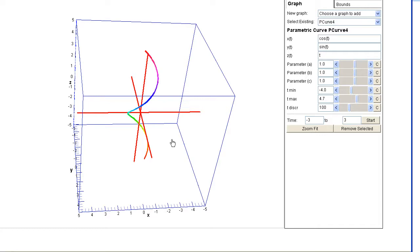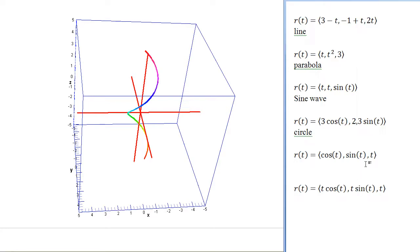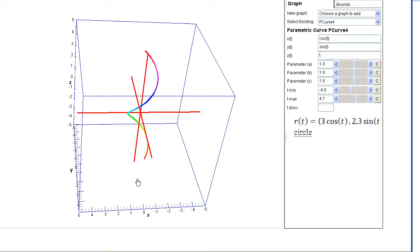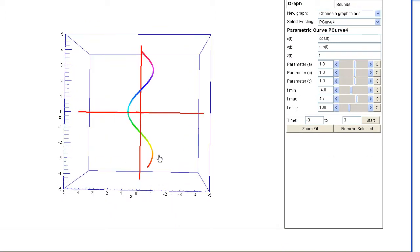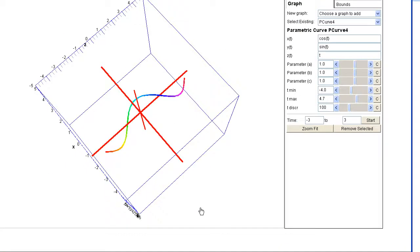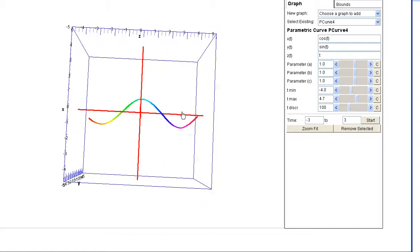So as we rotate around, the z value is increasing, giving this shape. Notice that if we were to look in x and z, we should see basically a cosine function. And you can see the cosine function here. It might look better if we turn it this way.